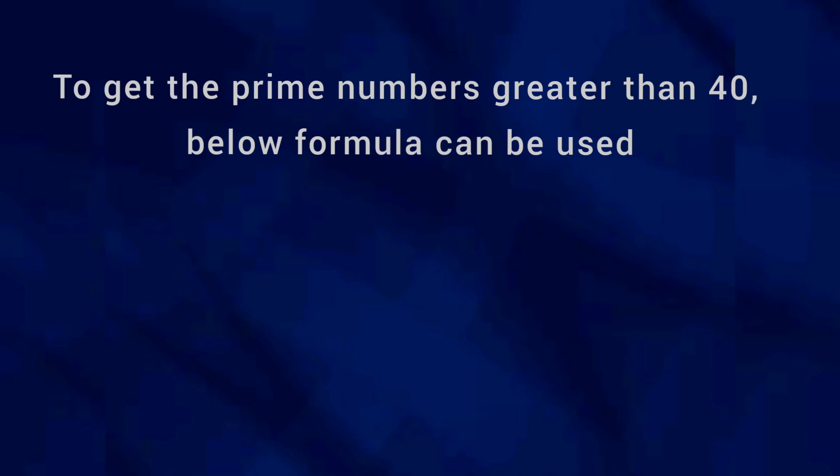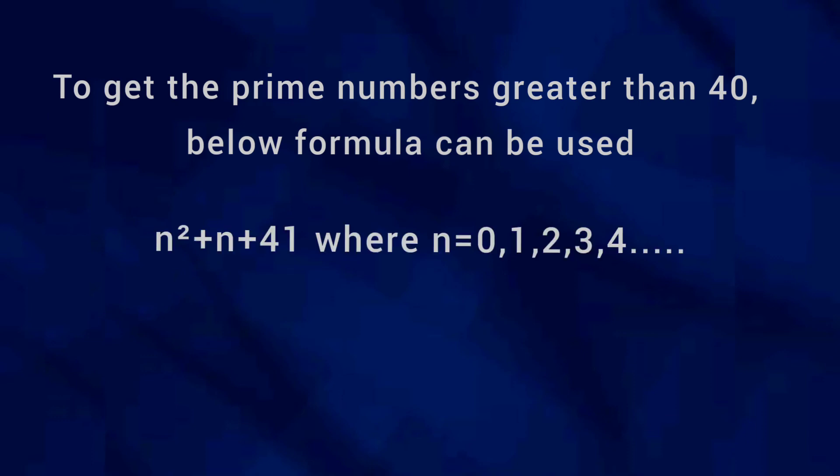To get prime numbers greater than 40, you have another formula: n² + n + 41, where you can take n values 0, 1, 2, 3, etc. And that is how you can find prime numbers by using the formula.